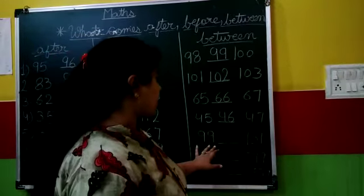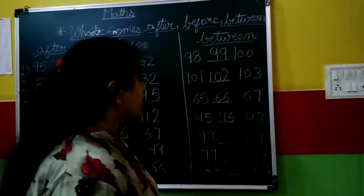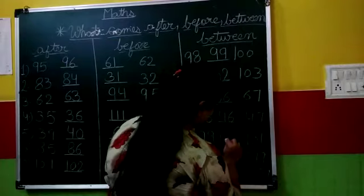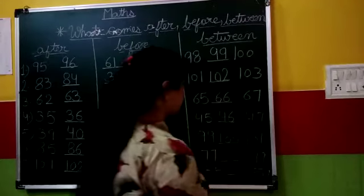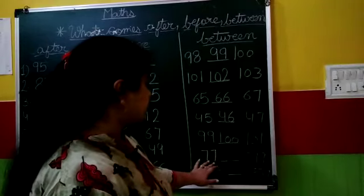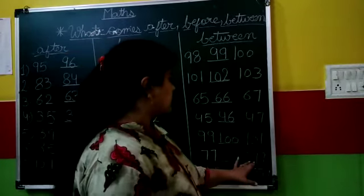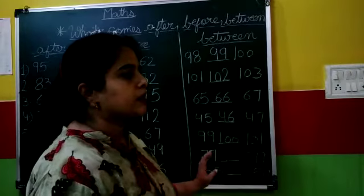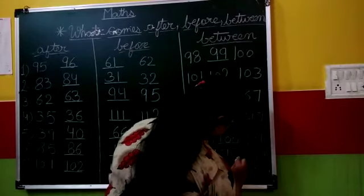99, 101. What number comes in between? 100. 77, 79. What number comes in between? 78.